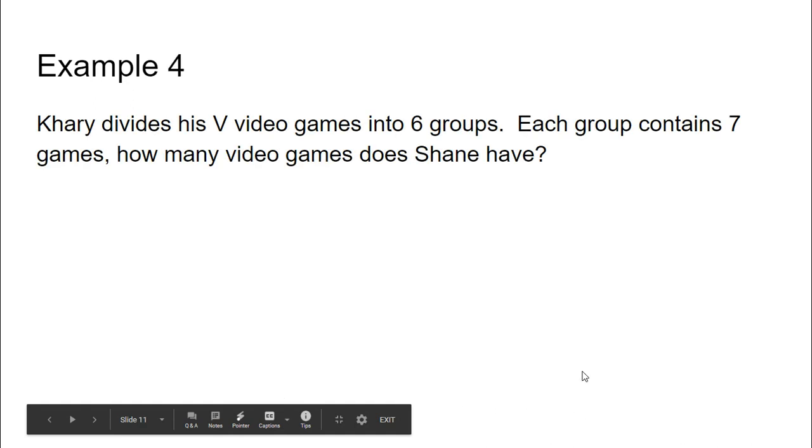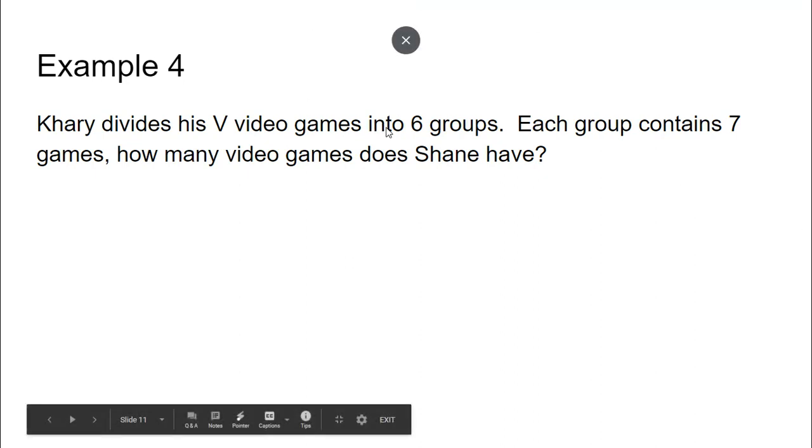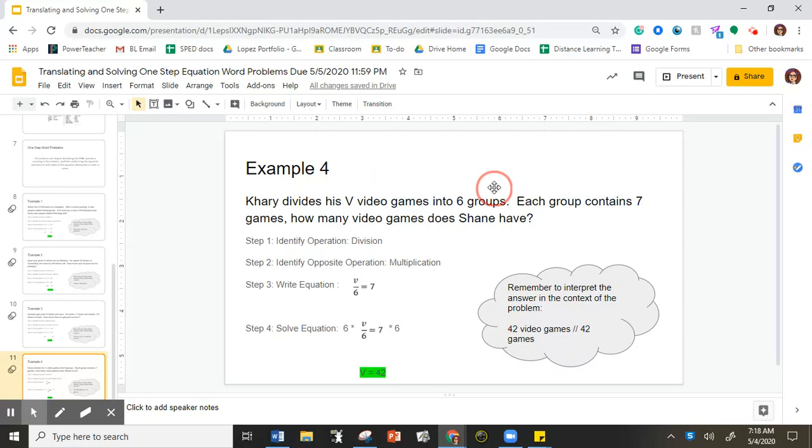For the last example, I have Kyrie divides his V video games into six groups. Each group contains seven games. How many games does Kyrie have? If I'm dividing here, that's my keyword. So that's always going to be your first step. Whatever you identify as your operation is going to be your first step. Now your second step is identify the opposite operation. So the opposite operation of division is multiplication.